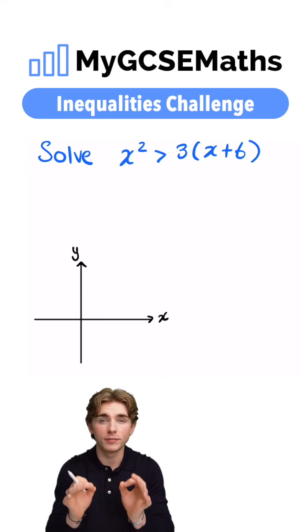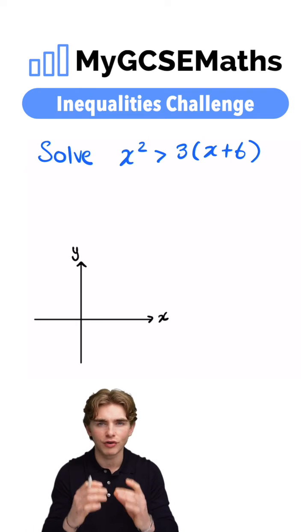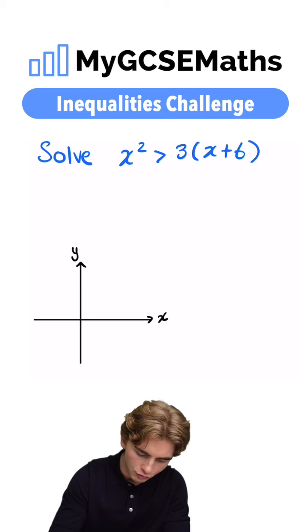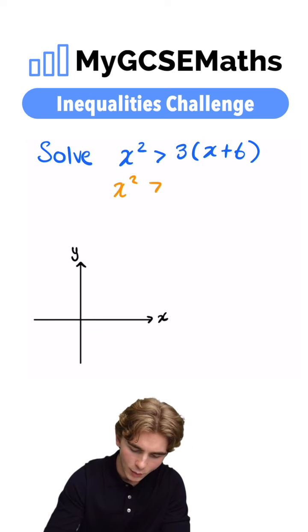Our first step is going to be to rearrange this so that we have something is greater than or less than 0. So I'm going to write out x squared is greater than, and we're going to expand these brackets when we get 3x plus 18.